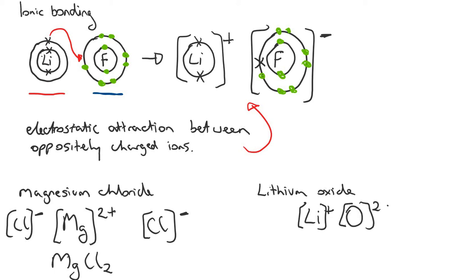So oxygen will always, when it forms an ion, form a two minus ion because it needs to gain two electrons. If lithium can only give away one electron, there must be two lithium atoms that give away their electron to oxygen. So there are actually two lithium ions that get formed. And so the formula for lithium oxide is Li2O.